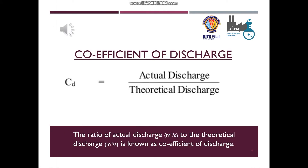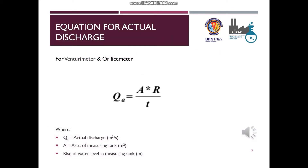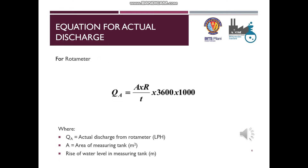Now let us see how to calculate the rate of actual discharge. First, we must define what a coefficient of discharge is — it is the ratio of actual discharge to the theoretical discharge. For a venturimeter and orifice meter, the actual discharge equals the product of the area of the measuring tank and the rise of water level, divided by the time taken. For a rotameter, the same formula applies but the result is multiplied by 3600 and 1000.